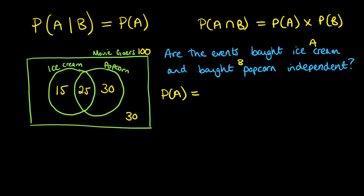So the probability of A, so that's the probability they bought ice cream, is 40 out of 100. The probability they bought popcorn, that is 55 out of 100. The probability of A intersection B, so that they bought both, is 25 out of 100.